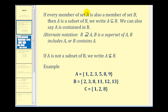If every member of set A is also a member of set B, then A is a subset of B, and we use this notation here. We can also say that A is contained in B. There is an alternate notation: if we switch the order, we can say that B is a superset of A, or that B includes A.